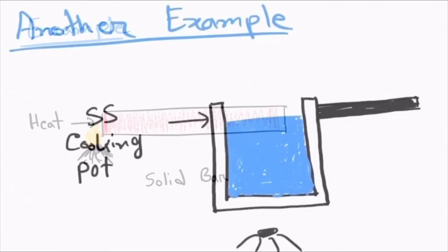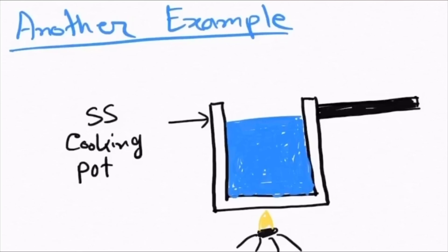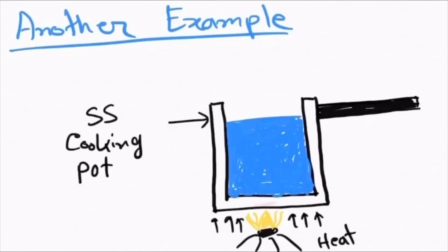Let's look at another example. Imagine you have a stainless steel cooking pot that is being heated on the stove. The bottom of the pot is being heated and is rising in temperature — this is actually heat conduction. This heat is going to heat up the water inside the pot and raise its temperature and cause it to boil. Since there was no bulk motion in the water, that was heat conduction.